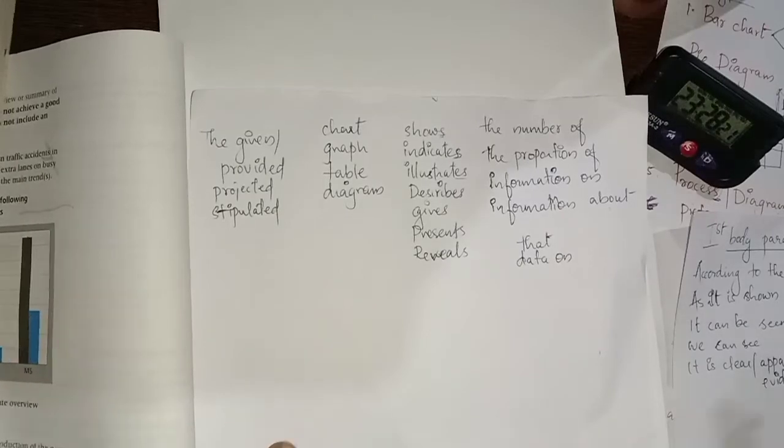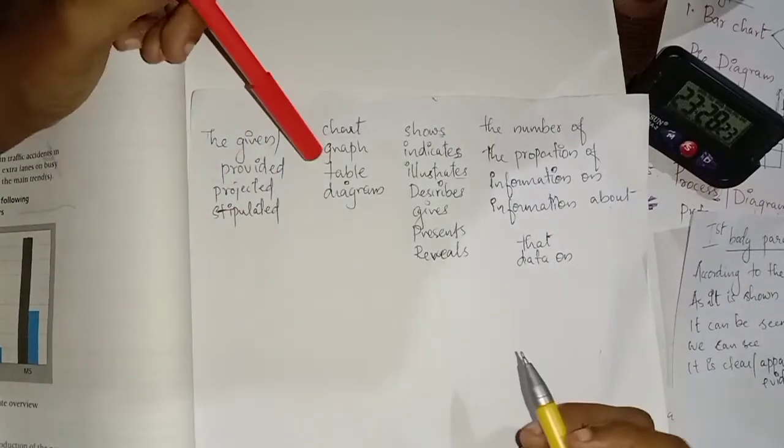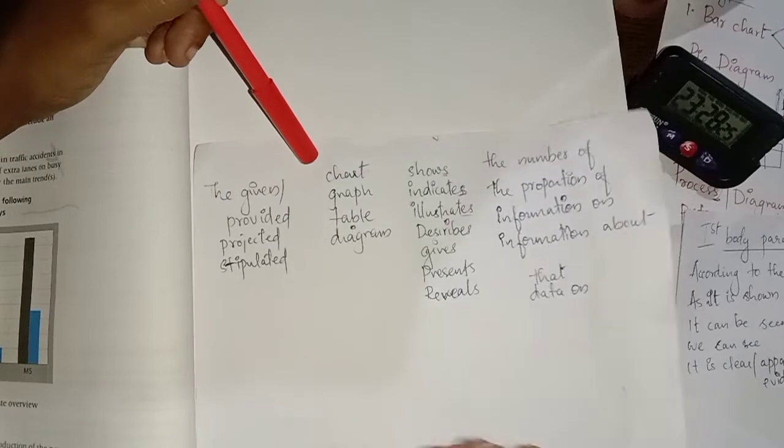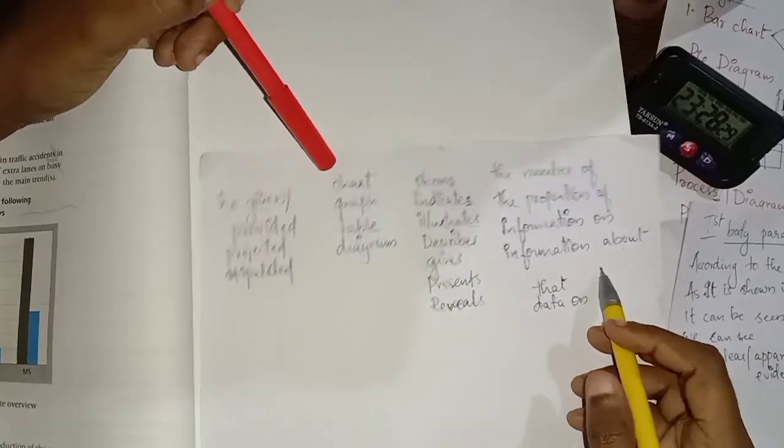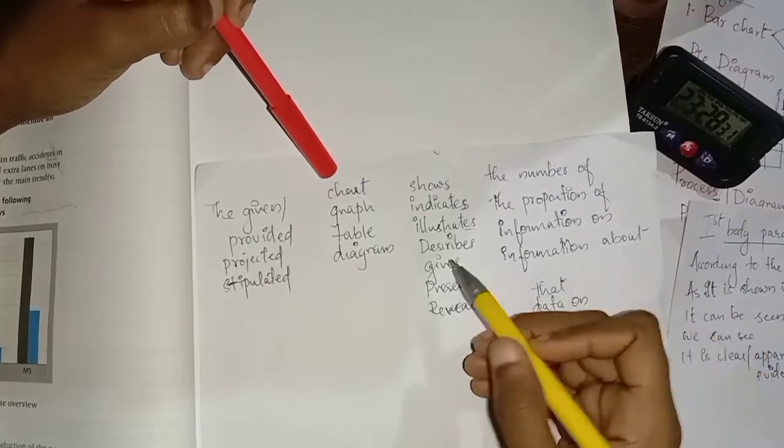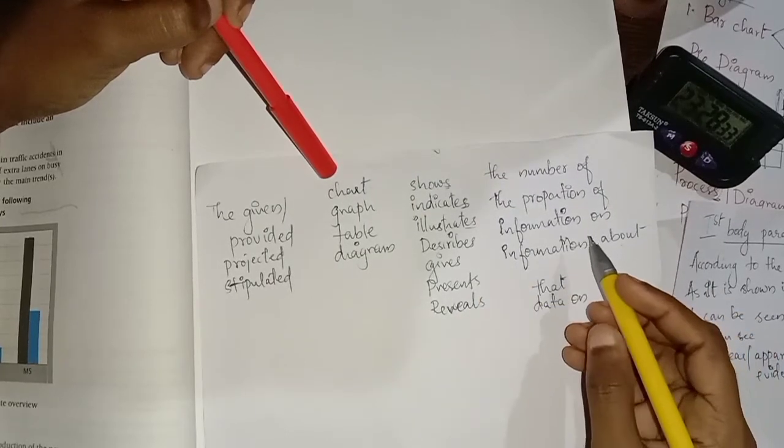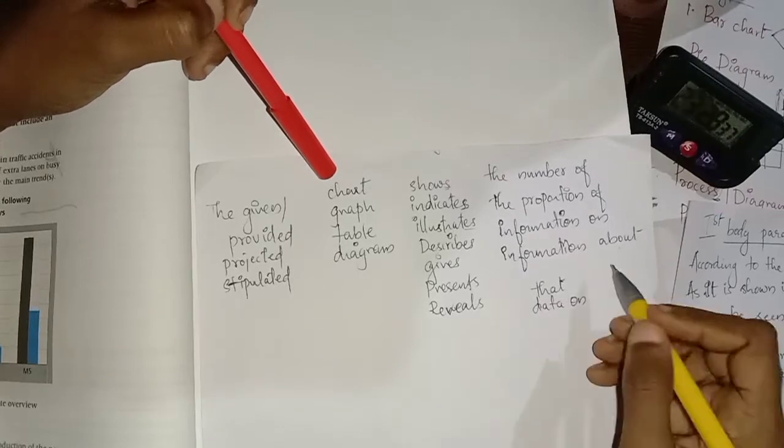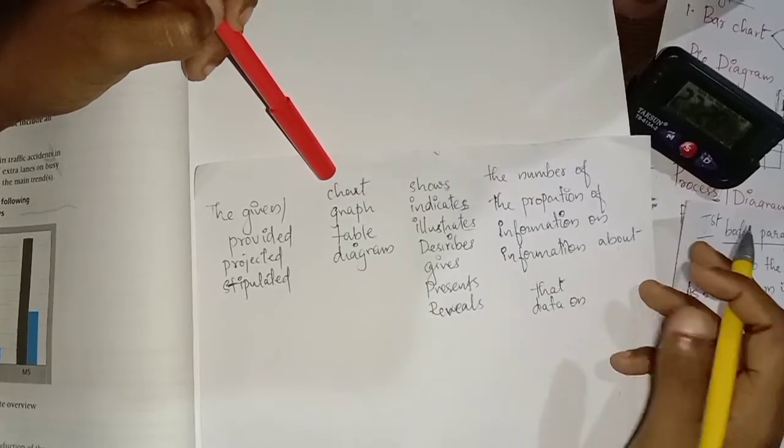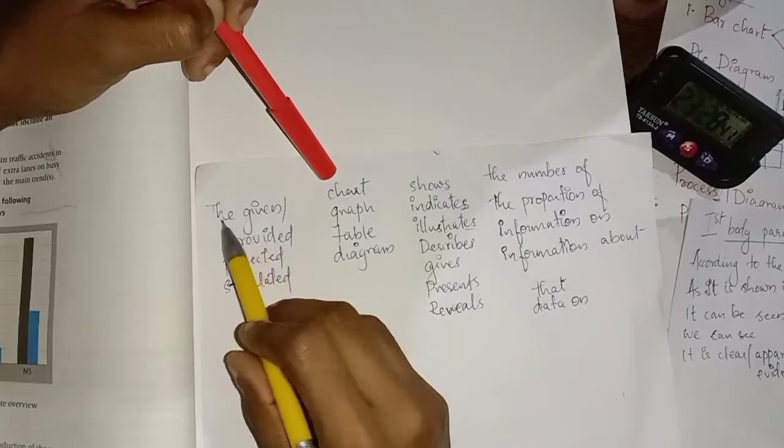Today we will see how to write an introduction, the very first sentence of your introduction. They will provide you the data - a chart, graph, table, whatever it is. You don't need to write the introduction there will be first in also, so you need to mention this is the most effective way to write.